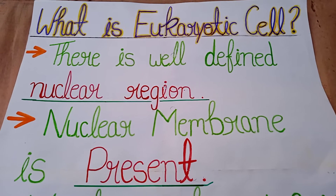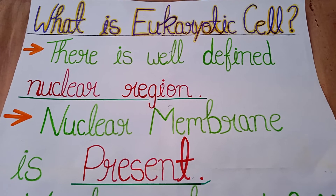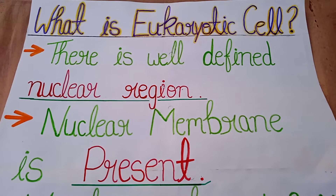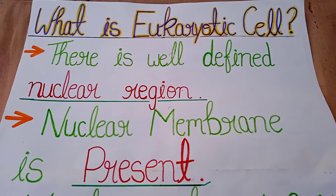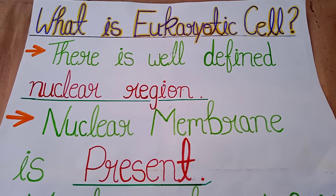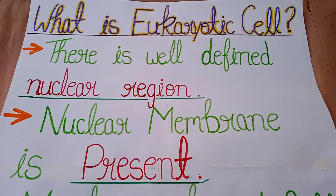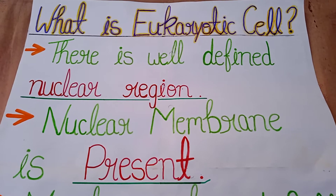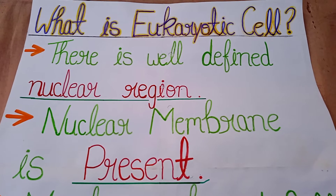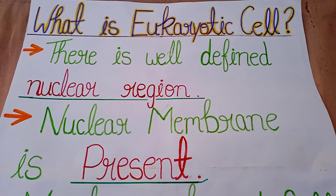Now let's begin and come to the first point. There is a well-defined nuclear region. In a eukaryotic cell, the nuclear region is well defined. Eukaryotic cell mein nuclear region achchi se bana hua hota hai.